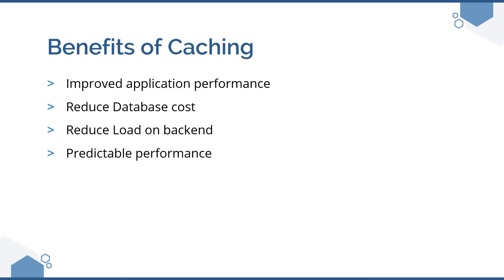Some of the common benefits of caching: we need to improve application performance and reduce database costs. Every time you hit the database, it is a costly operation. Instead, you query your in-memory database, fetch the content faster, reduce costs, and invariably reduce the load on the backend. You also always get predictable performance. These are some of the basic benefits of caching and the different offerings of ElastiCache by AWS.